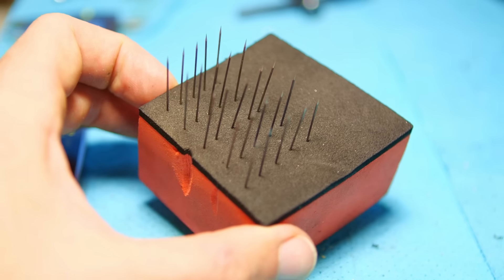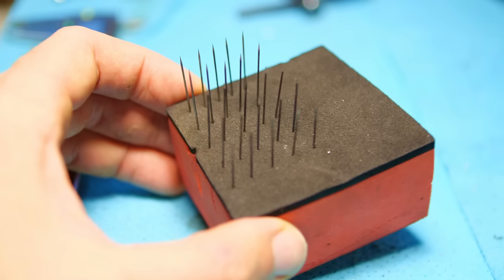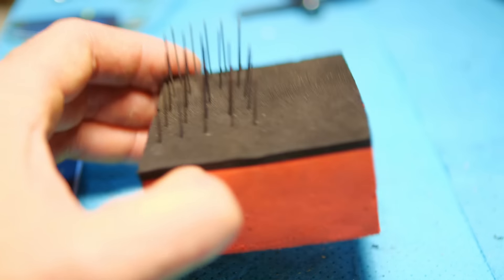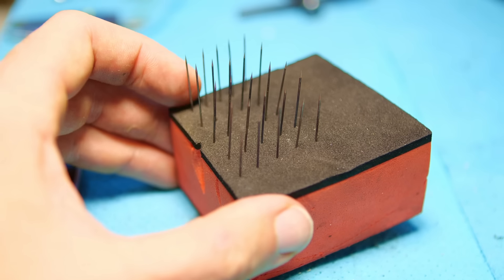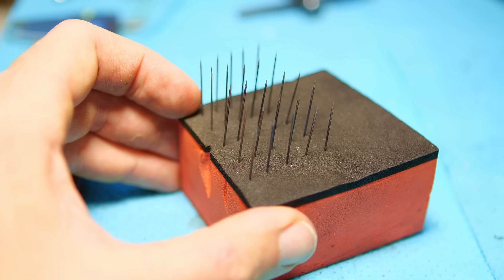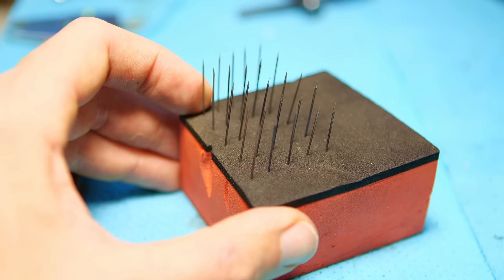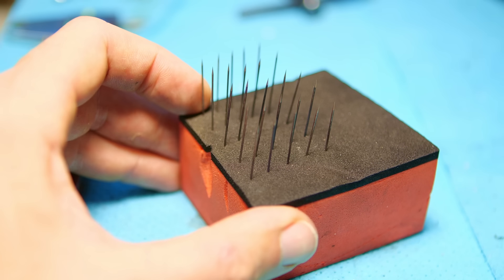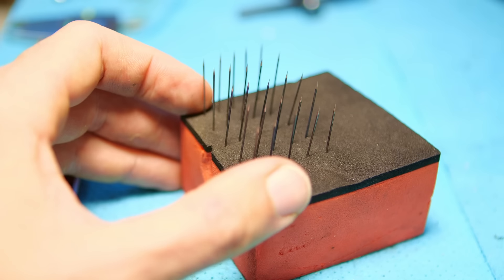So here are 25 of the flux capacitor needles, all ground and polished. They only need to be cut to length, but that's a very simple setup on the surface grinder. I hope you enjoyed this very needling problem solving exercise. Thanks for watching, thanks for the support and I'll be back!